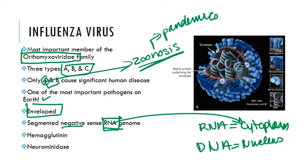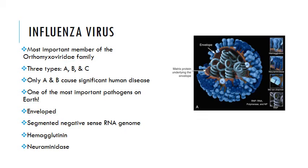We're going to go through the replication cycle of flu in detail. You need to understand the replication cycle of influenza virus because we have antivirals that interfere with it. One important thing about the influenza virus genome is that it's segmented — there are actually eight segments of RNA that make up the entirety of the genome. These are what allow for the many different strains of virus and contribute to the genetic instability associated with annual epidemics of flu.